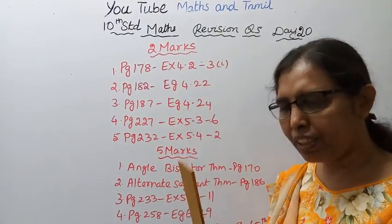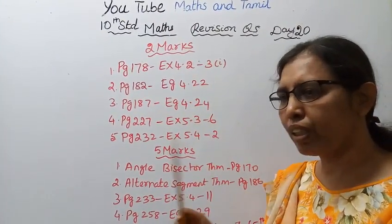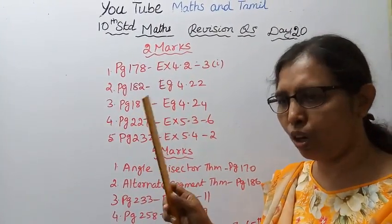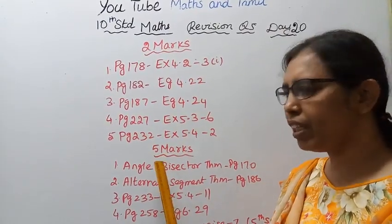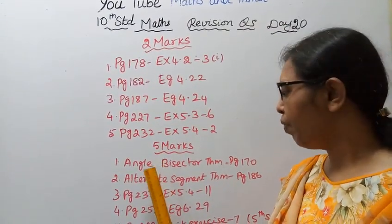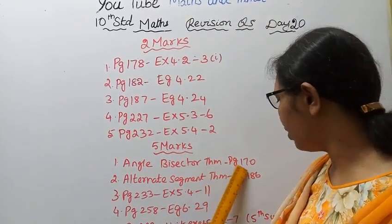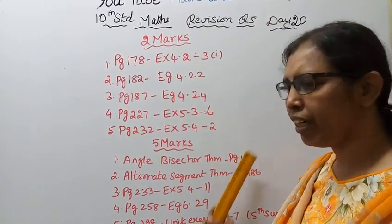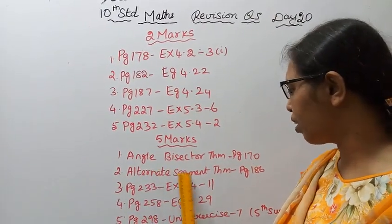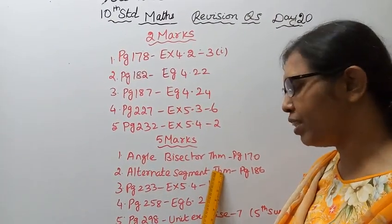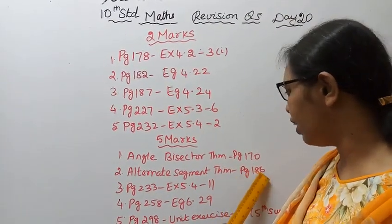In the playlist, the important two marks geometry. Then the theorem — the angle bisector theorem, page 170. The alternate segment theorem is easy, page 186.